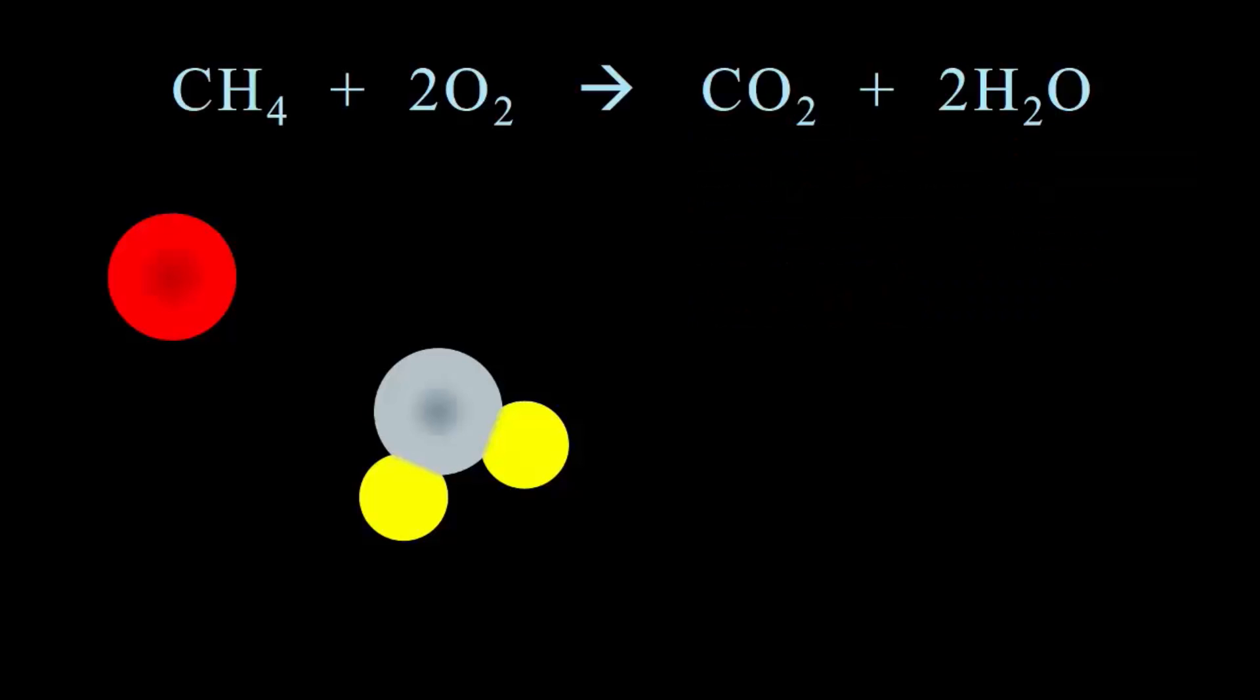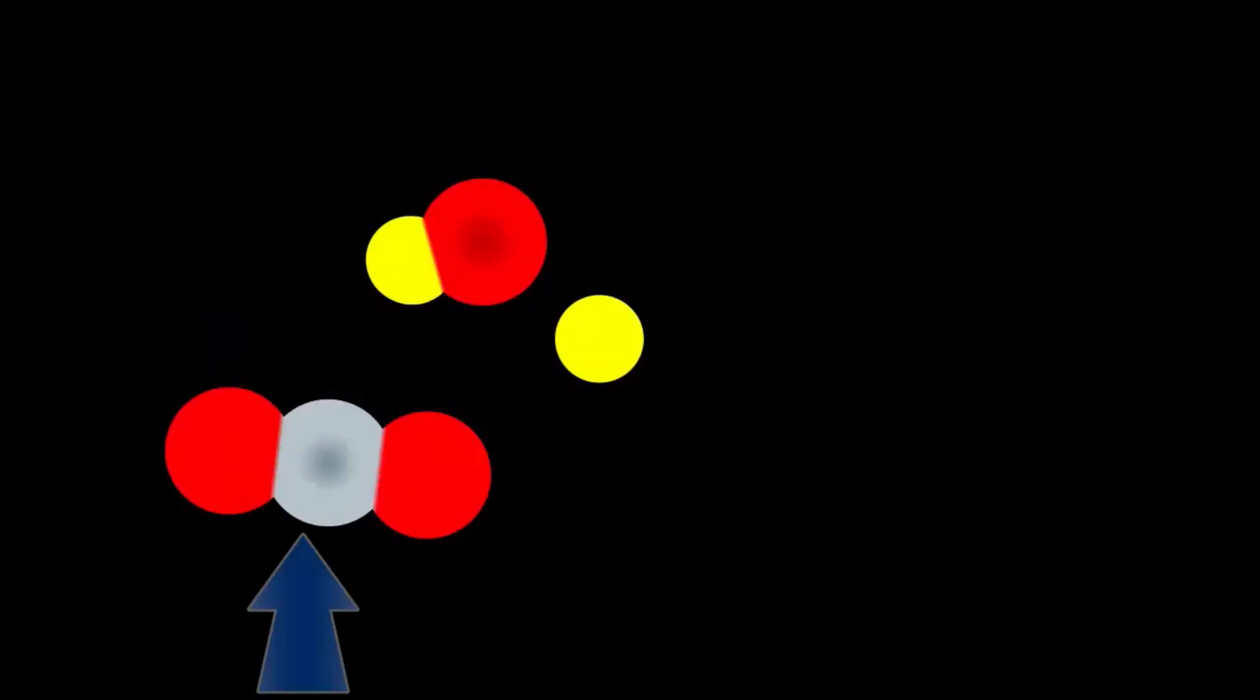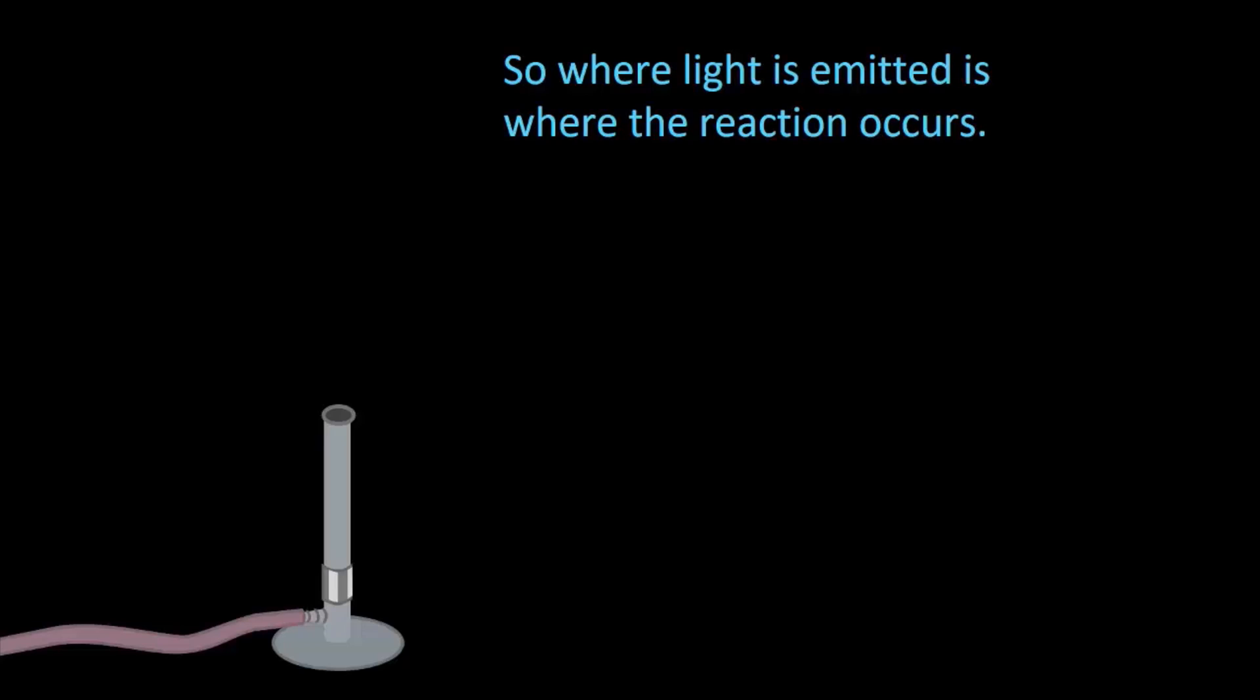In our balanced equation, we had another oxygen molecule. So let's add another one now and see what happens as we watch the reaction proceed. The collisions produce carbon dioxide. What's going to happen next? Two things. When the carbon dioxide forms, it gains a lot of kinetic energy and emits light. And then water again forms at a high kinetic energy and emits light.